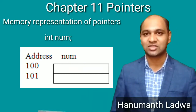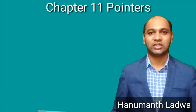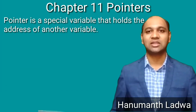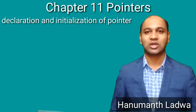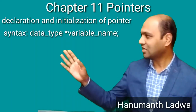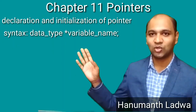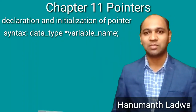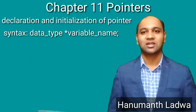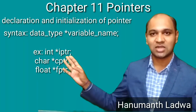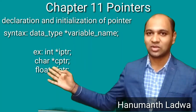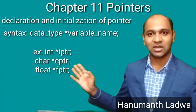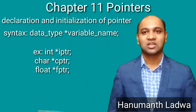Now let us study the definition of a pointer. A pointer is a special variable that holds the address of another variable. For declaration and initialization of a pointer, the general syntax is: data type, then asterisk symbol, then variable name, and semicolon. For example: 'int *iptr', 'char *cptr', and 'float *fptr', and so on.